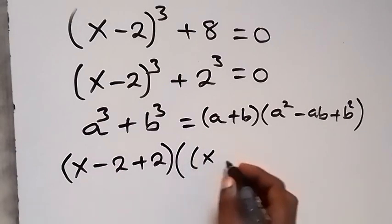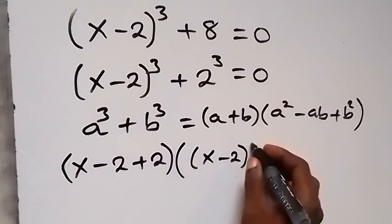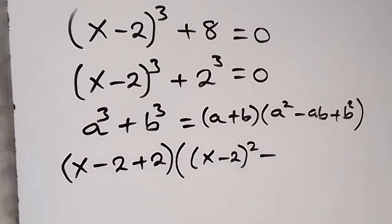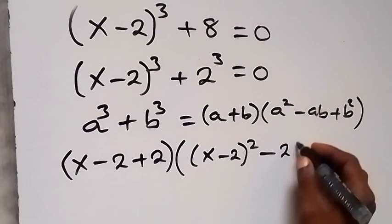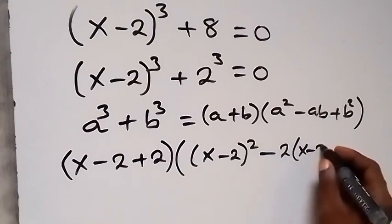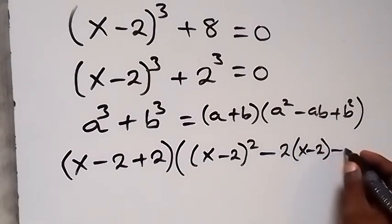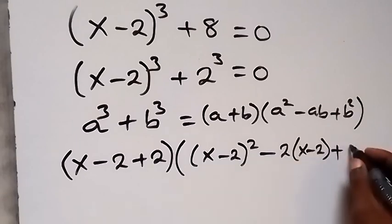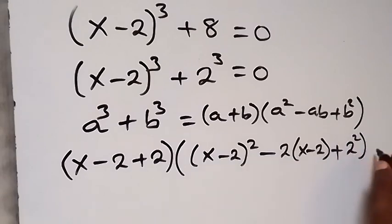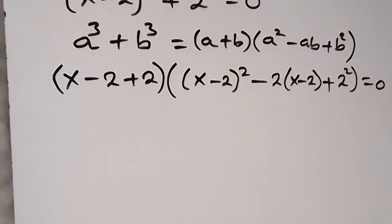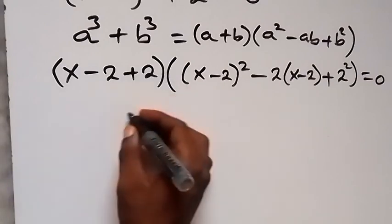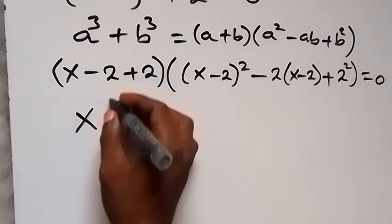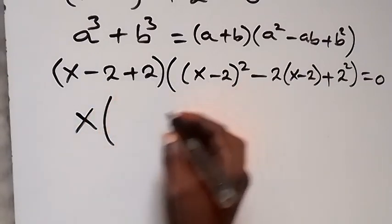...times (a² - ab + b²), that is: (x - 2)² minus 2(x - 2) plus 2² equals to 0. When we simplify, minus 2 plus 2 is 0, so the first factor becomes just x.